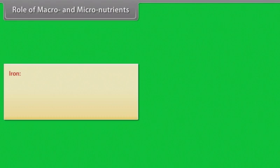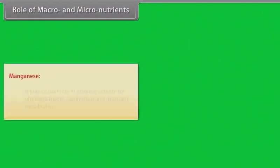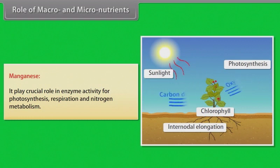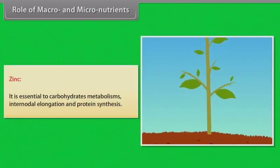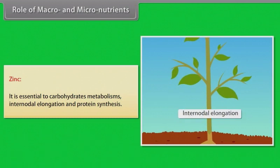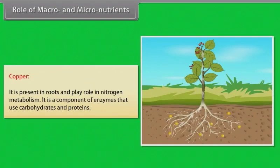Iron: it is absorbed by plants in the form of ferric ions. It is necessary for many enzyme functions and acts as a catalyst for the synthesis of chlorophyll. Manganese: it plays a crucial role in enzyme activity for photosynthesis, respiration and nitrogen metabolism. Zinc: it is essential to carbohydrate metabolism, internodal elongation and protein synthesis. Copper: it is present in roots and plays a role in nitrogen metabolism. It is a component of enzymes that use carbohydrates and proteins.